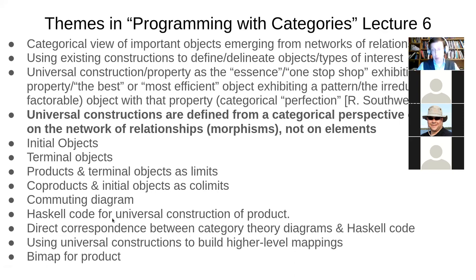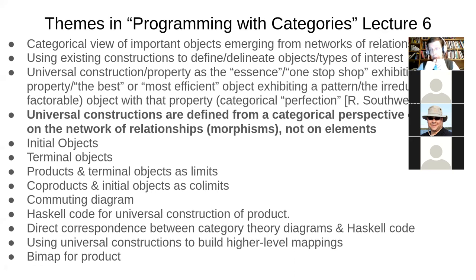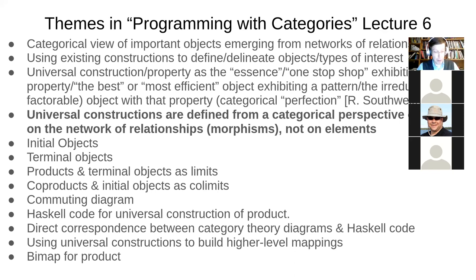The lecture also introduced Haskell code for pair, to serve as the universal construction of the process of product. There was this observation that translates directly into Haskell code — you can demonstrate that for any other object mapping to A and mapping to B, the functions from it to A and B are going to be in one-to-one correspondence with a function to A cross B, or these pairs.